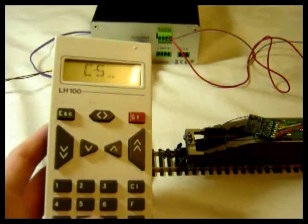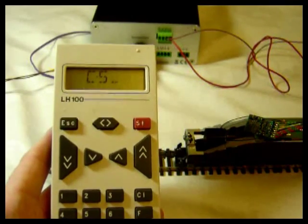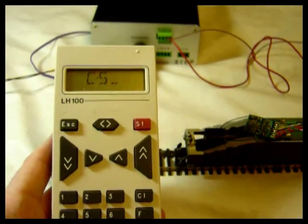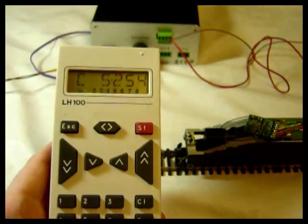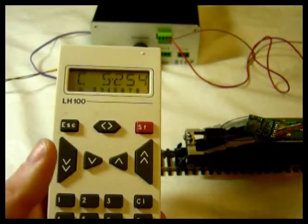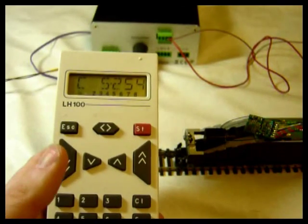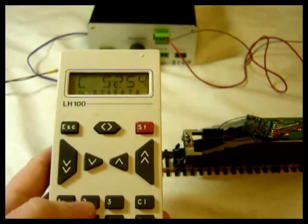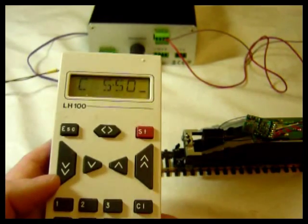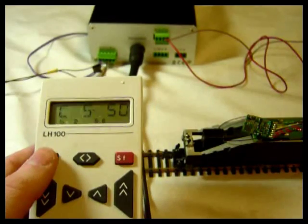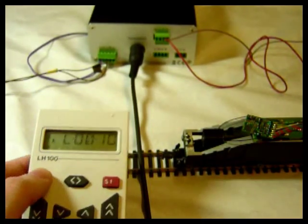CV5 is maximum speed. This is the maximum amount of power that the decoder will allow the motor to have. So if we read it, you'll find that it's been set at basically maximum 254. If we go in and reduce it, so I'm going to clear it, put it down to say 50.